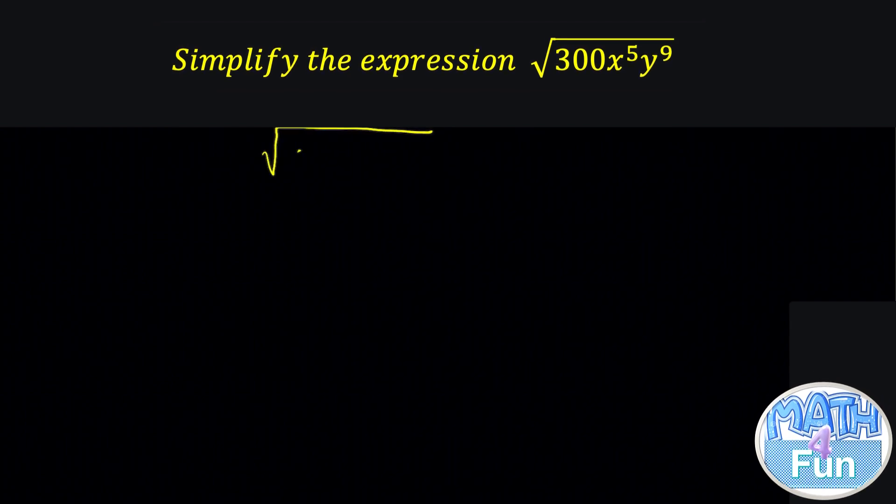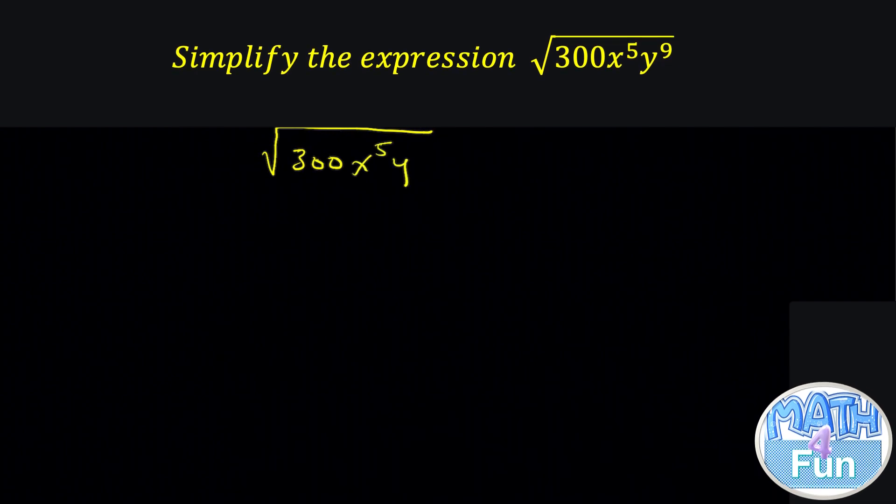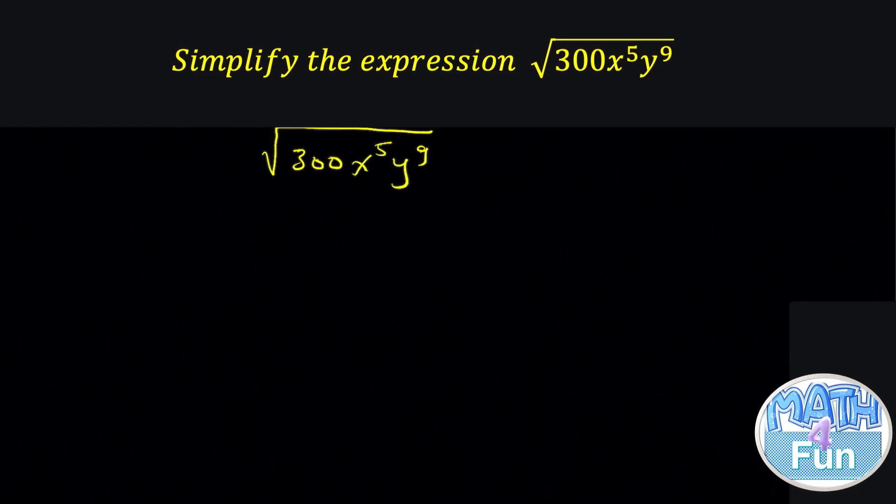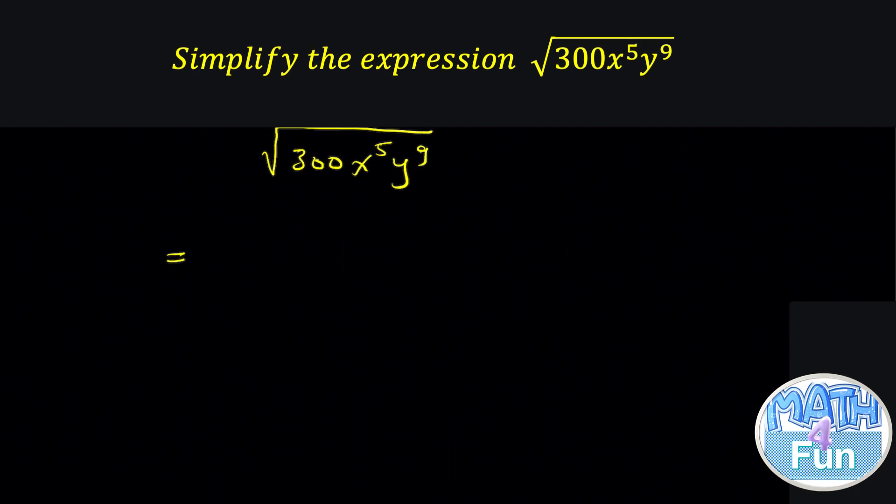Let's write it. Radical 300x to the power 5y to the power 9. How are we going to do that? We know that every number repeated twice inside the radical, which means that you can take it outside the radical.